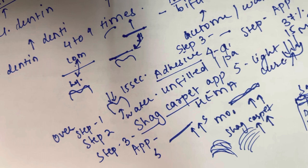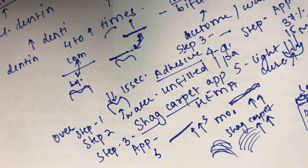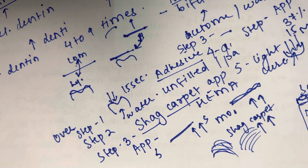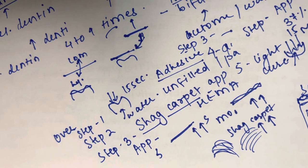The advantages of the fourth generation are: the separate application of conditioner is eliminated, reducing the number of steps compared to the third generation; it has the highest bond strength because both enamel and dentine are etched; there is proven effectiveness of adhesion with consistent results; and it is low technique-sensitive.